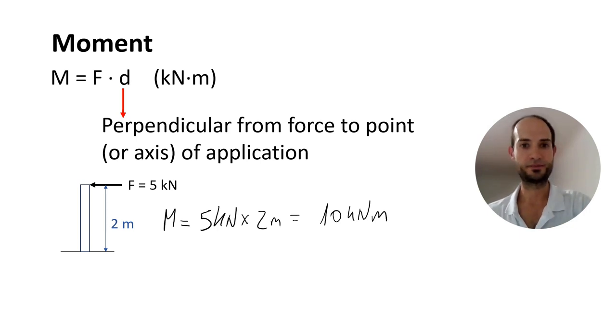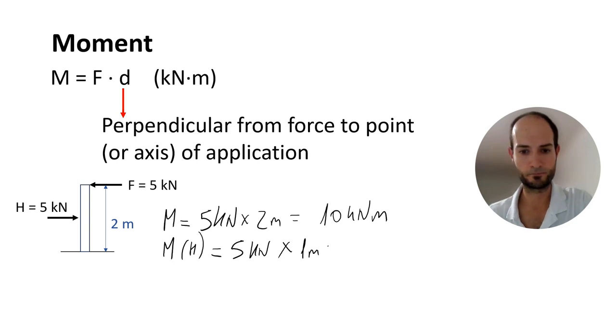Now, let's put another load. This one we call H, and it goes on the opposite direction at mid-height. Let's calculate it. I call it moment for H. So, the load is 5 kN and the distance to the ground is, in this case, 1 meter. That's 5 kN per meter. Now, we have two forces, two loads on opposite directions. And obviously, the moments are on opposite directions.